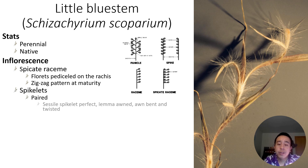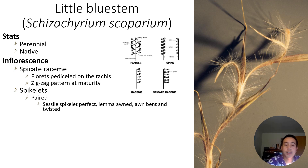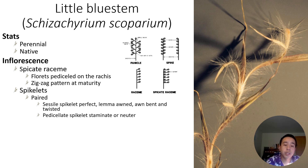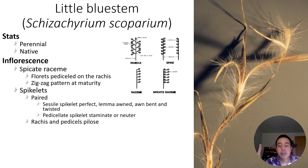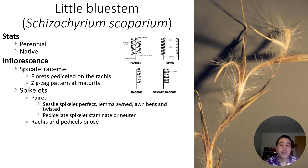The spikelets are often paired. There's a sessile spikelet that's perfect, with a lemma that's awned — typically bent and twisted. And like we saw with big bluestem, it also has a pedicillate spikelet that's staminate or neuter and can be infertile. The rachilla and pedicels are often what we call pillose, which means they're very hairy — as you can see clearly in the image above. These are soft hairs, not bristly or spiky.